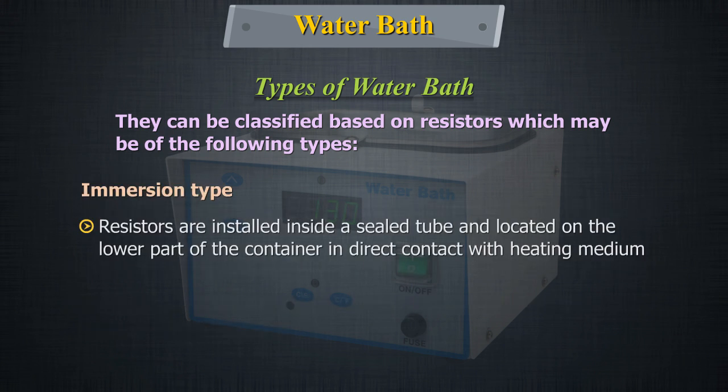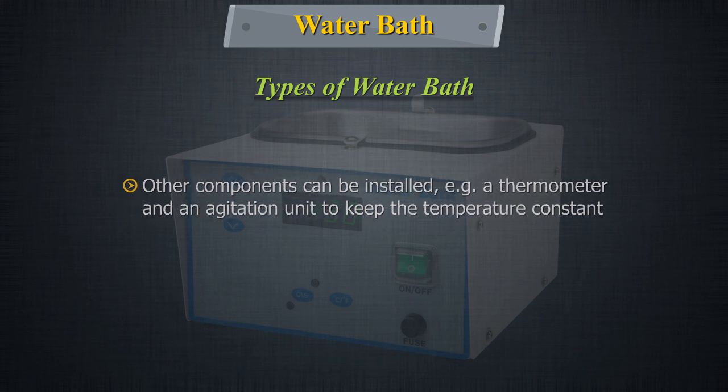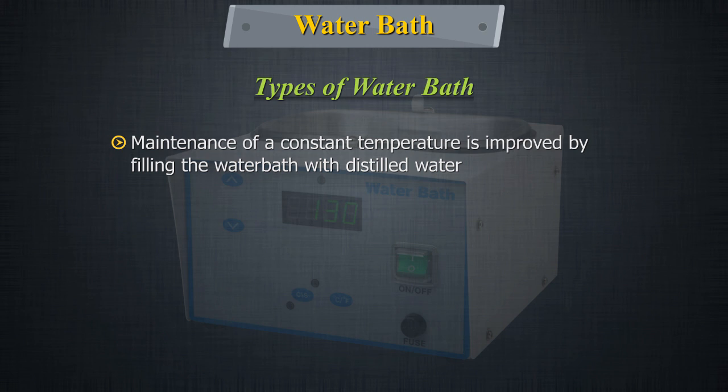In the immersion type, the resistors are installed inside a sealed tube and located on the lower part of the container in direct contact with the heating medium. Other components can be installed, for example a thermometer and an agitation unit to keep the temperature constant.